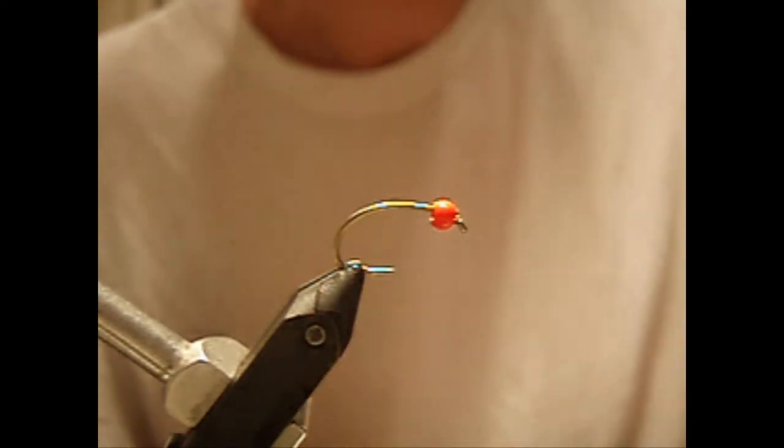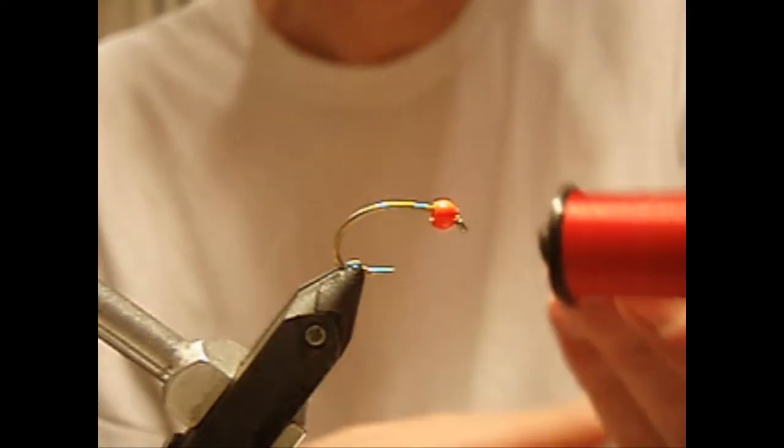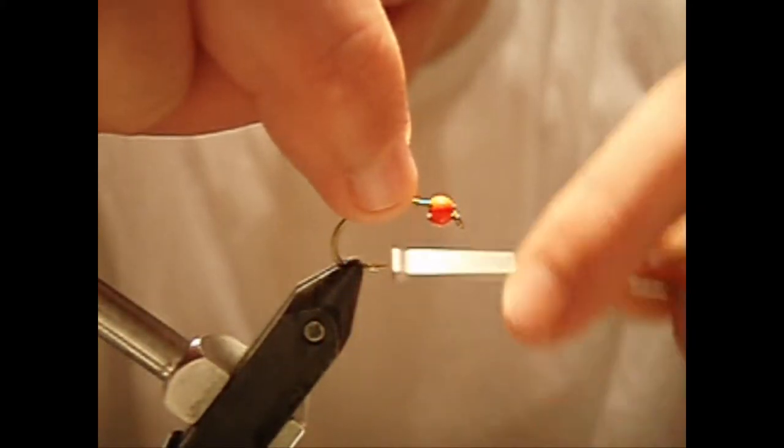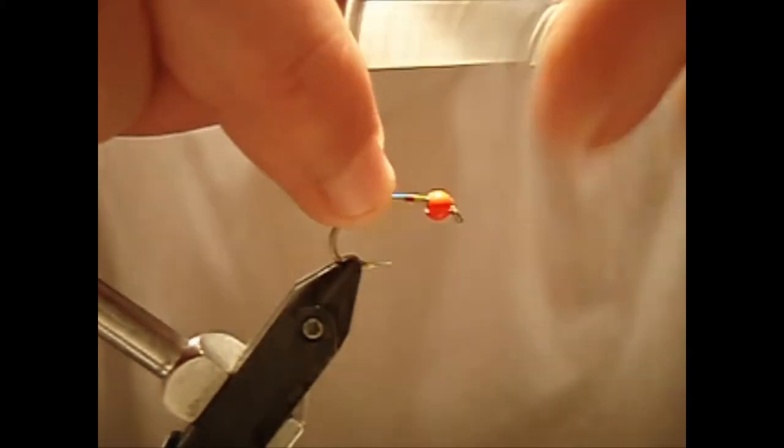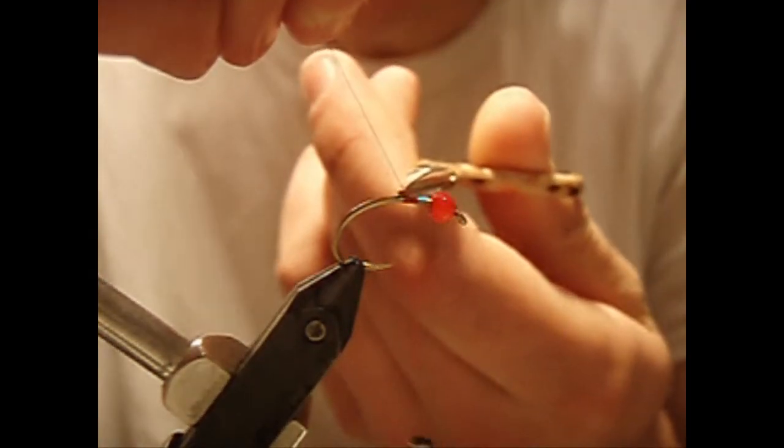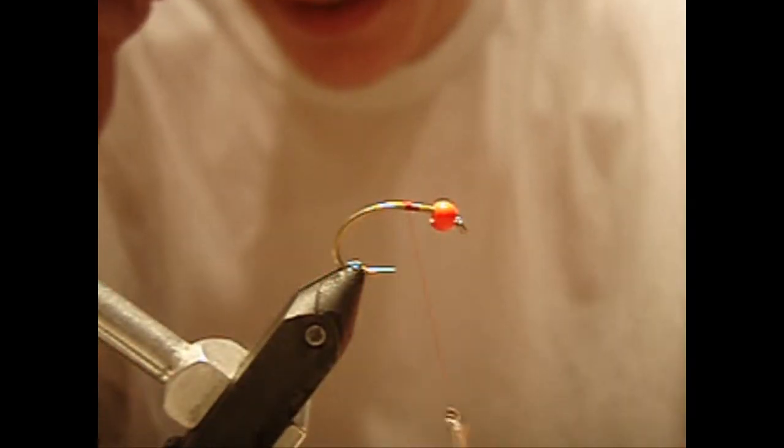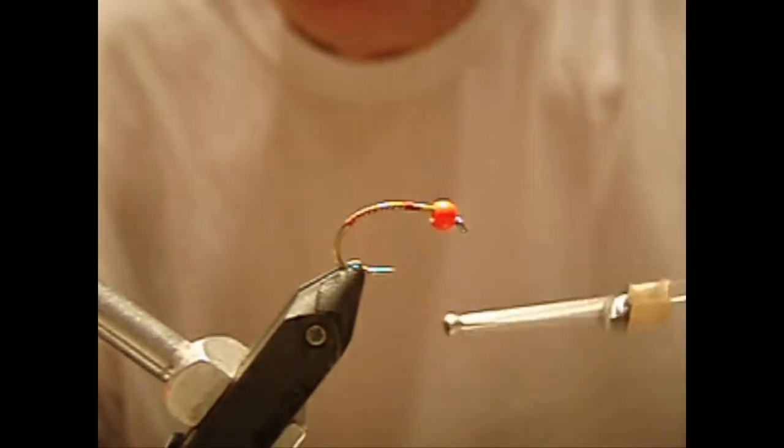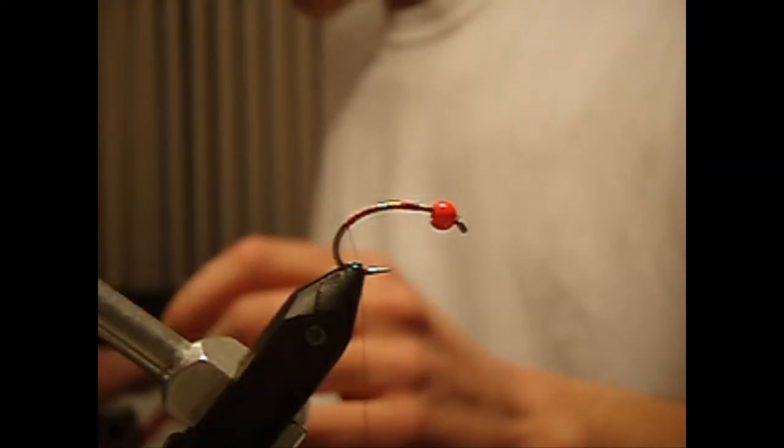Materials we're going to be using start with Uni-thread 8-0 in red. We're going to start that thread well back from the bead, about the halfway point on the shank. Nip off your tag end there, and work your thread well back onto the bend so you get a nice curve.